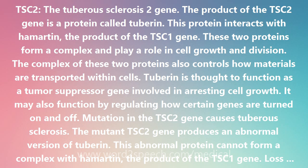TSC2, the tuberous sclerosis 2 gene. The product of the TSC2 gene is a protein called tuberin. This protein interacts with hamatin, the product of the TSC1 gene. These two proteins form a complex and play a role in cell growth and division.